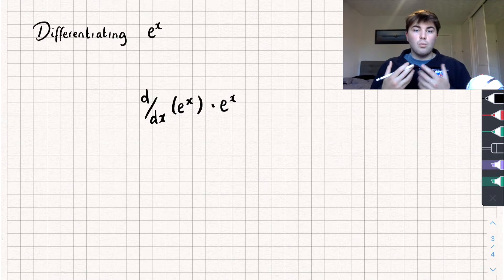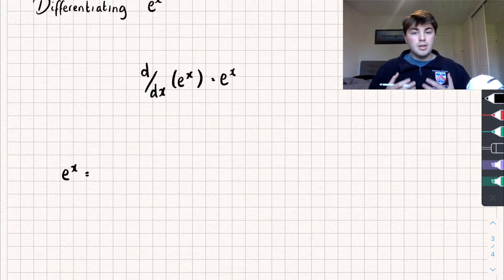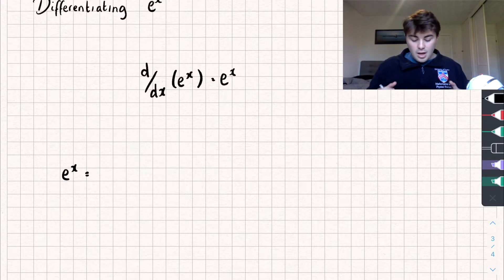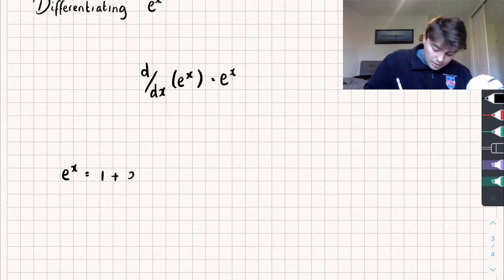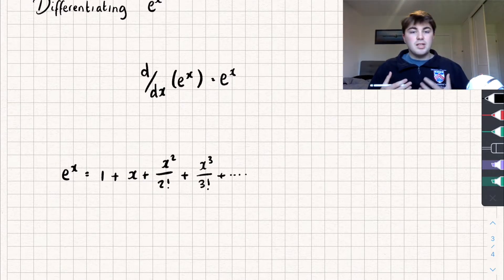For A level you don't actually need to know why this is true, but if you want some understanding I can give you a reason. This isn't going to be a proof because it's not mathematically rigorous, but it will give you some more understanding. In maths we can represent things such as e to the x as an infinite sum — an infinitely long list of things added together. The infinite sum equal to e to the x is: 1 plus x plus x squared over 2 factorial plus x cubed over 3 factorial, and if this list goes on forever that is equal to e to the x.